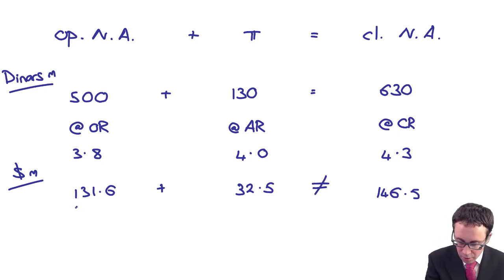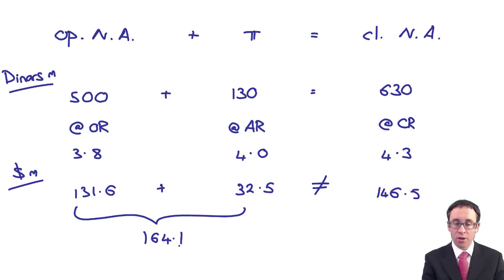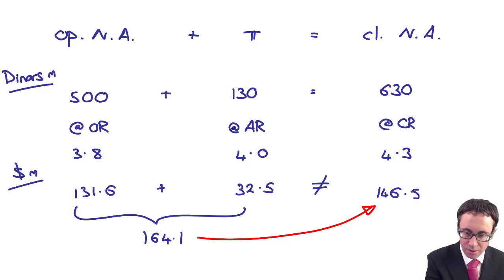If you total it up, the 131.6 plus the 32.5, does that give me 161.4? That's what we would expect it to be. However, when we've consolidated it, it's now 146.5.